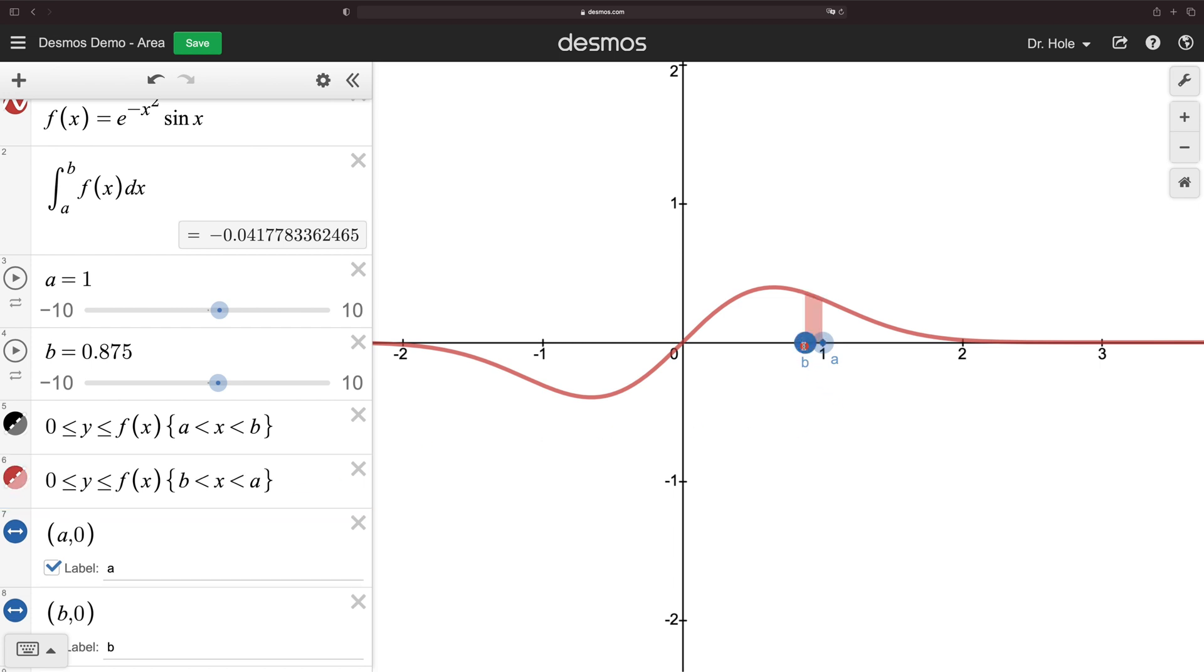So if b is to the left of a, then the definite integral, and note here that Desmos has evaluated out, approximated, it's negative valued. But when b is to the right of a, the definite integral is some positive value. Excellent.